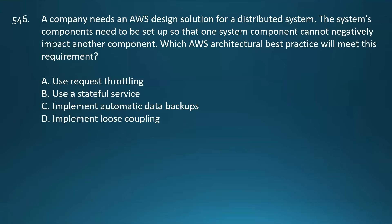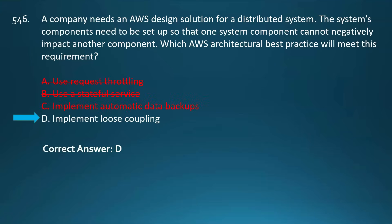Request throttling helps control traffic and protect APIs but does not ensure component independence. Using a stateful service can increase dependency between components and make scaling harder. Implementing automatic data backups is good for data protection but unrelated to isolating component impacts in distributed systems. Loose coupling is the correct answer — it is an AWS architectural best practice that ensures system components are independent, meaning a failure or change in one component does not cascade to others, making it easier to scale, maintain, and troubleshoot.